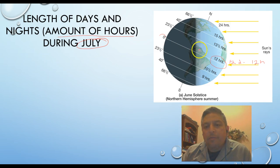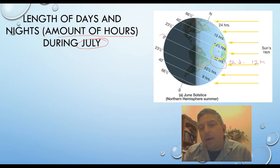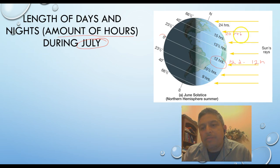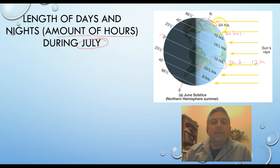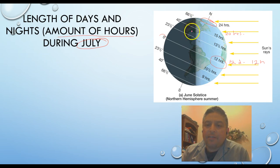But look what happens as you move from the equator towards the North Pole. Notice the amount of hours of daylight is actually increasing — from 12, to 13 and a half, to 15 hours. Probably somewhere between those two lines would be around 20 hours. And then over here, 24 — this is going to be 24 hours daylight. You're not going to see any nighttime, as you can see in this tilt.